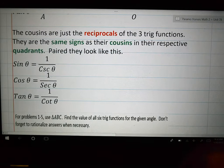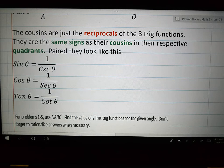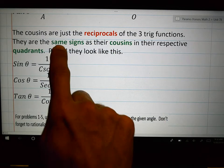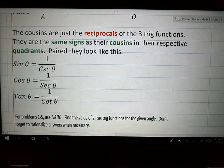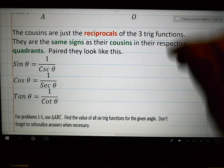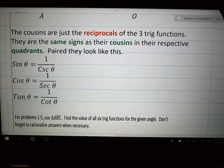So as I mentioned, the cousins are just the reciprocals of the three trig functions. They are the same signs as their cousins in the respective quadrants. So what does that mean? That means this.